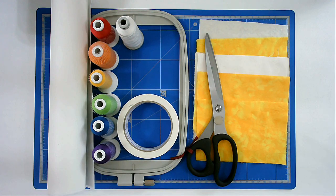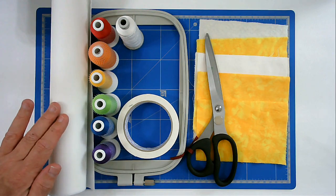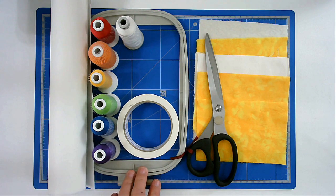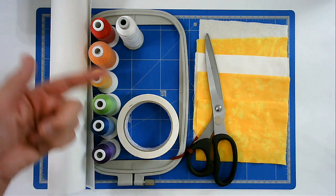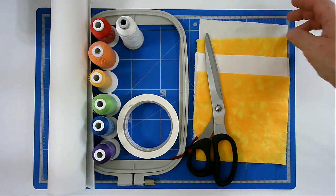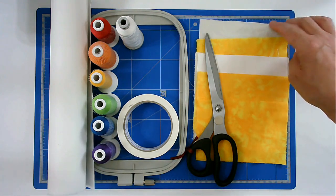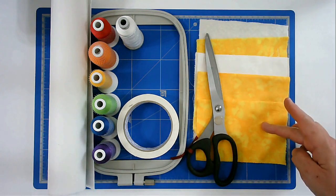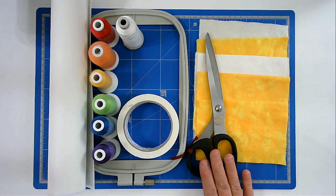For this piece mat, I'm going to be using cutaway stabilizer, my 5x7 hoop, tape, I've got a whole rainbow of threads there, I've got cotton quilters batting, my fabrics cut to size and a nice sharp pair of fabric scissors.